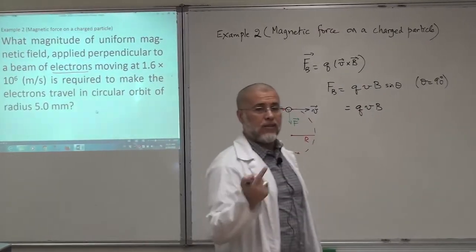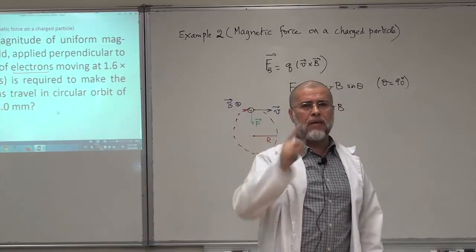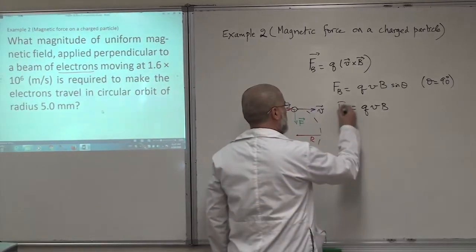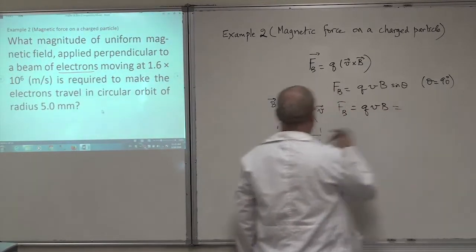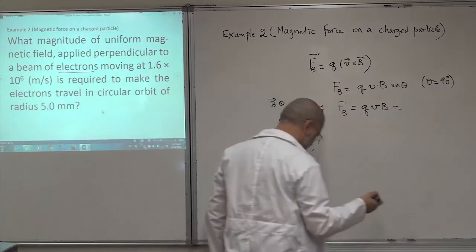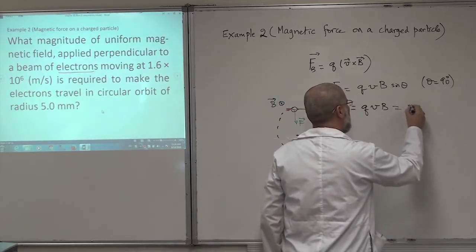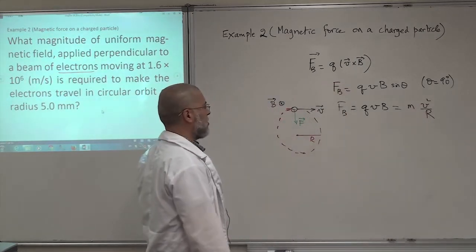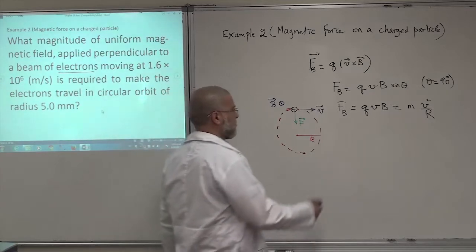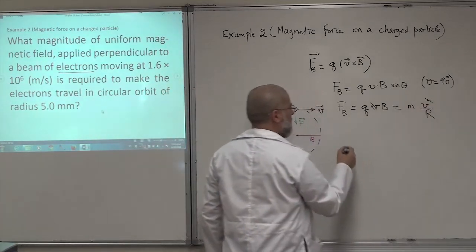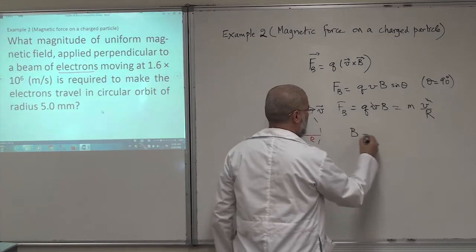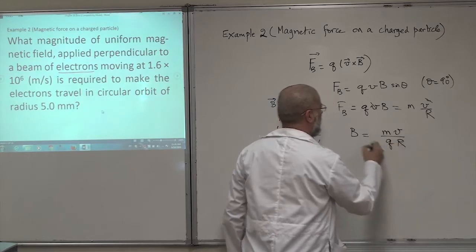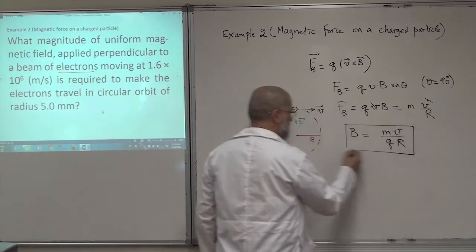Since there is circular motion, we know from physics that this force equals MV²/R, where R is the radius of your circular path. So QVB = MV²/R. This V will cancel, and then you can find the magnetic field: B = MV over QR. That's the magnitude of my magnetic field.